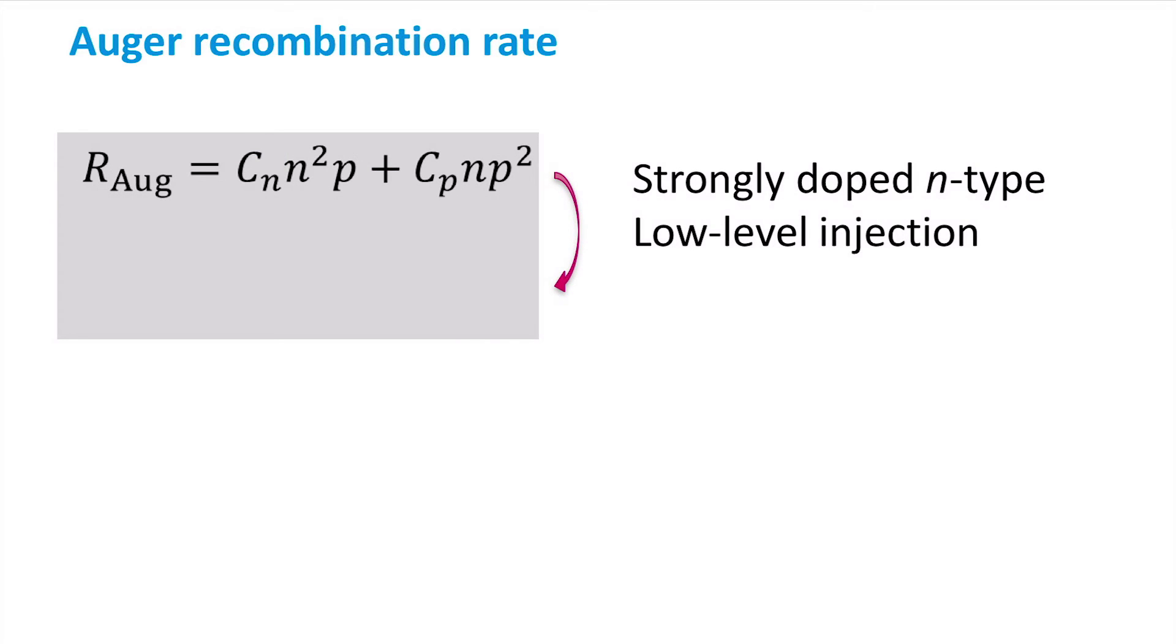If we look at a strongly doped N-type material under low-level injection, we can assume that the electron density N is equal to the donor concentration Nd, and that the hole concentration P is negligible compared to the electron concentration N.